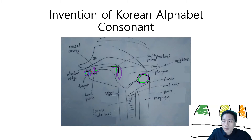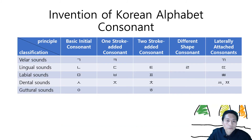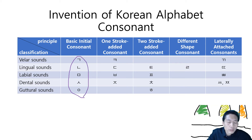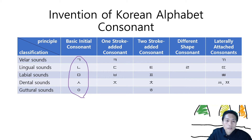Now let's move on to the principles of how Korean consonants are added. The five basic initial consonants are 기역, 니은, 미음, 시옷, and 이응. To create more consonants, King Sejong added either one stroke or two strokes to these base consonants.